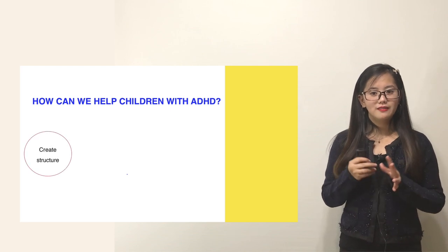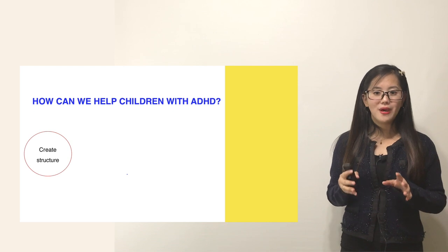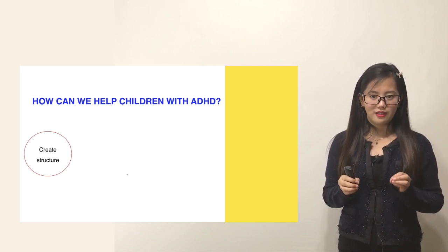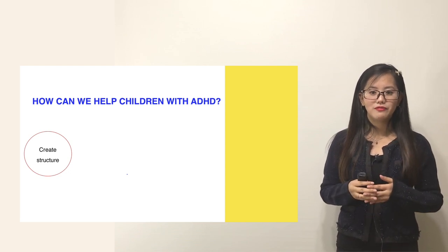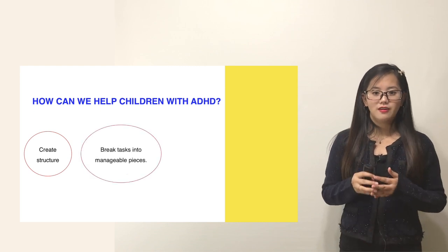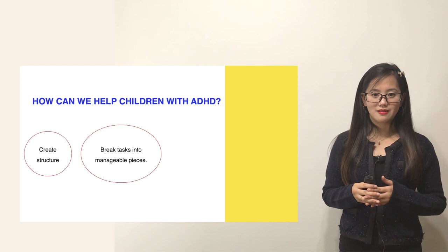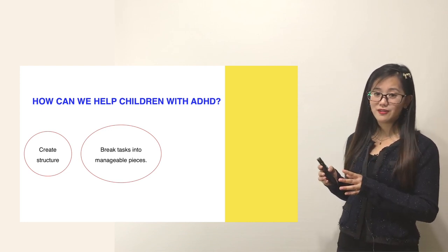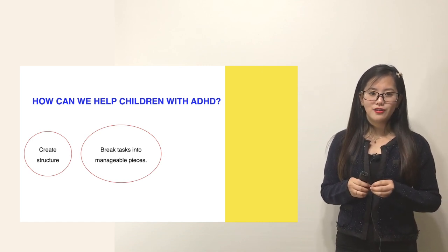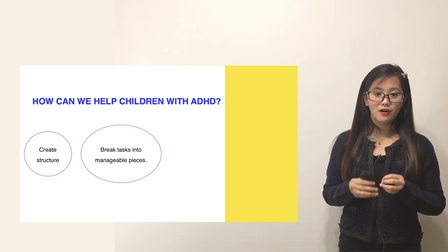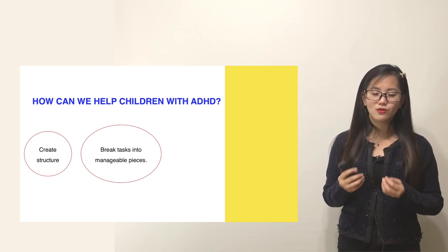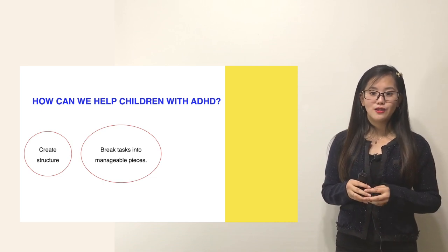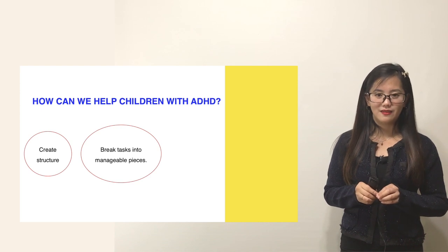First, we can create a structure. Make a routine for your child and stick to it every day. Simple daily tasks such as having your child lay out his or her clothes for the next day can provide essential structure. Second, break tasks into manageable pieces. Try using a large wall calendar to help remind a child of their duties. Color-coding chores and homework can keep your child from becoming overwhelmed with everyday tasks and school assignments. Even morning routines should be broken down into discrete tasks.